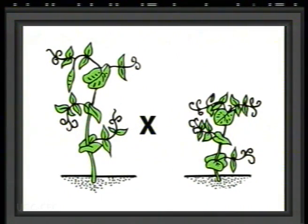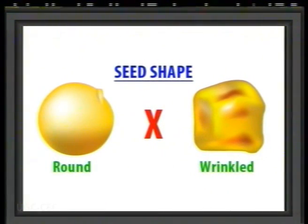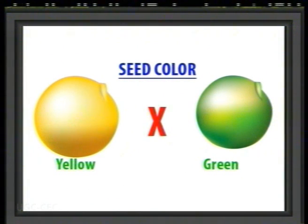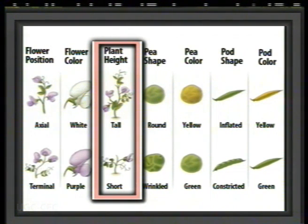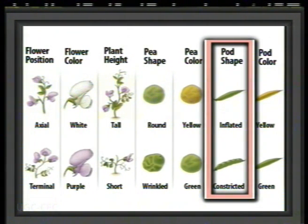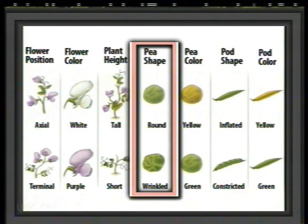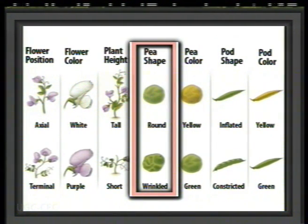For example, plant height, seed shape, seed color, etc. Finally, he selected 22 of these varieties for hybridization, each differing from the others with respect to one or more characters. Mendel selected seven characters for his study, and each of these characteristics had two alternate or contrasting forms. These include height (tall or short), pod shape (inflated or constricted), seed shape (round or wrinkled), pea color (green or yellow), and others. In his experiment, Mendel crossed varieties differing in one pair of contrasting characters.